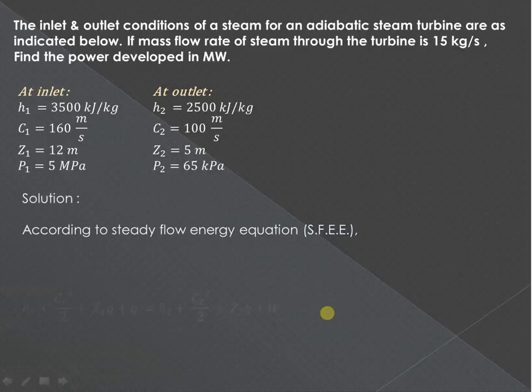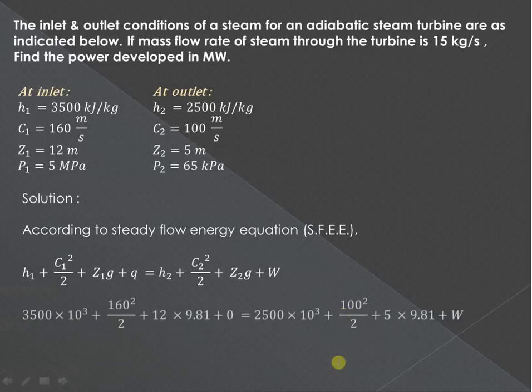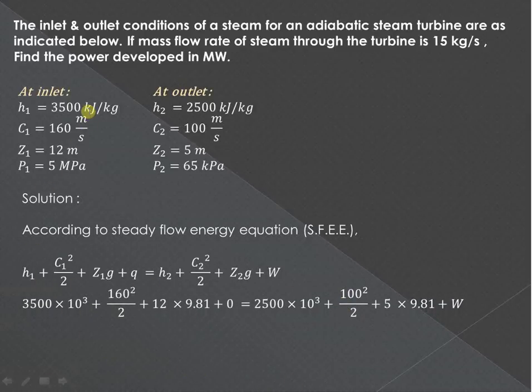According to the steady flow energy equation, we can apply this particular steady flow energy equation. Now here we'll convert this kilojoule - in this particular example we'll convert this kilojoule into joule, so multiply by 10 raised to 3. So all these particular terms will have same units, that is along with this kinetic energy, potential energy - all these units will have the same unit of joule per kg.